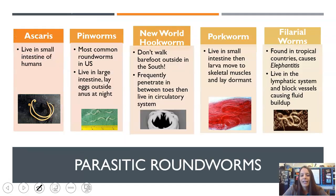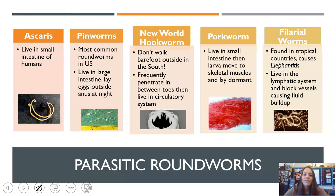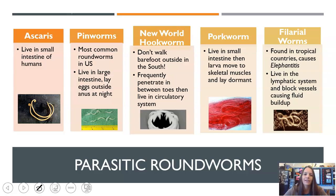Unfortunately, roundworms are also parasitic. There are five major roundworm parasites. First is Ascaris — these live in the small intestine of humans and are very common. Pinworms are actually the most common roundworms in the U.S. — they're very tiny, live in your large intestine, but come out of your anus at night to lay their eggs and go back in. The itching causes you to scratch and spread the eggs — pretty disgusting. The New World hookworm is also very common in the Southern United States.